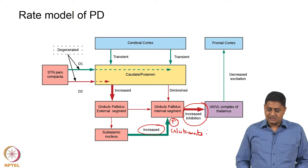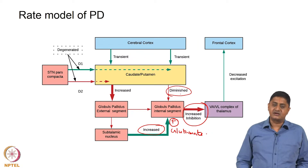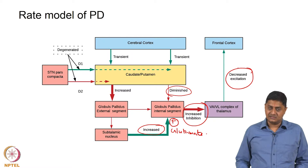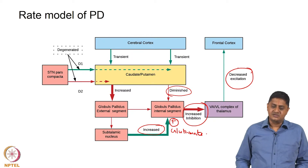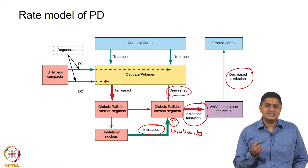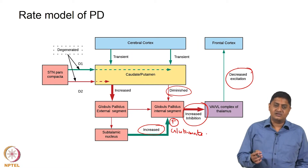It turns out that the activity of the direct pathway is diminished or reduced. Because of this, there is a net inhibition at the VA/VL thalamus, essentially leading to a reduced amount of excitation at the cortex. What we mean by increased, diminished, or reduced is the firing rate of the neurons in these circuits — the firing rate is increased or decreased, not the number of neurons.